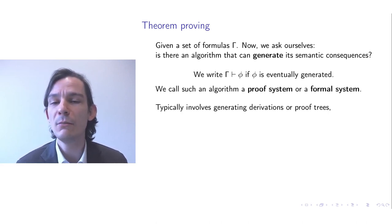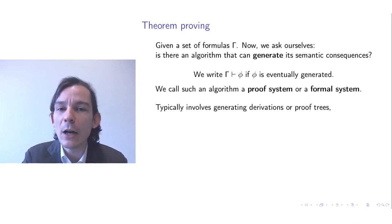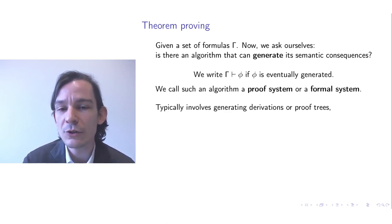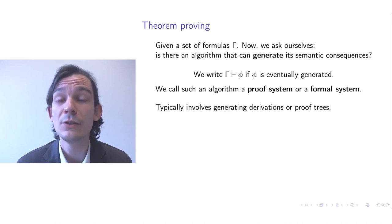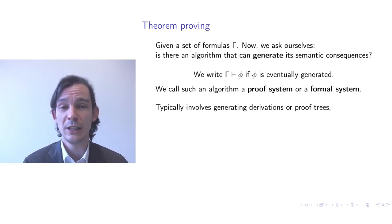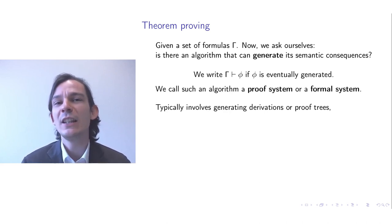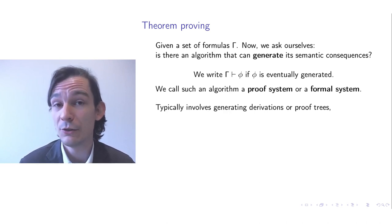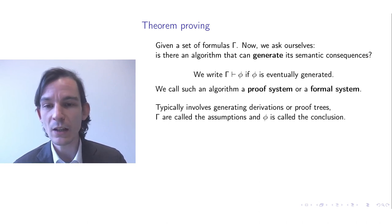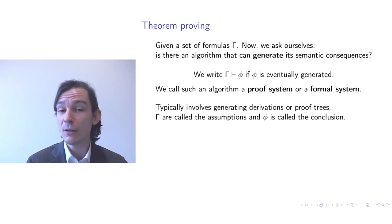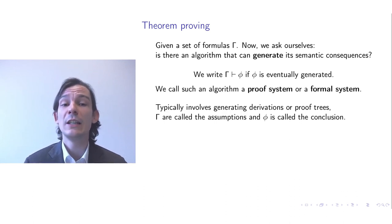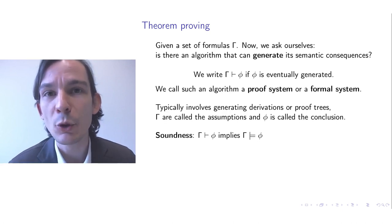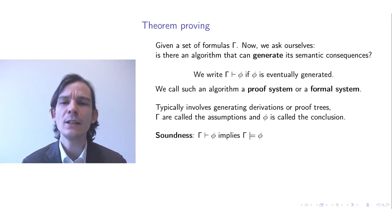If you have a formal system, how do you typically describe algorithms to generate formulas? That involves the generation of derivations or proof trees, much similar to generating sentences of a formal language. The set of formulas gamma are called the assumptions, and phi is called the conclusion — the assumptions are formulas used in a proof tree, and phi is the formula derived at the bottom. There are meta properties of soundness, which is a property of the algorithm that generates semantic consequences.